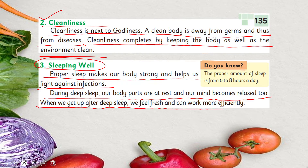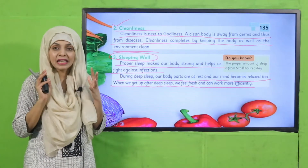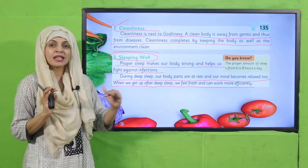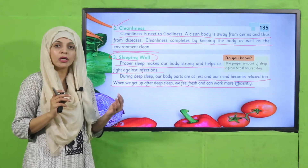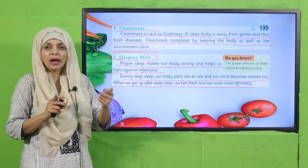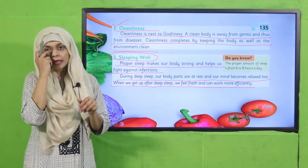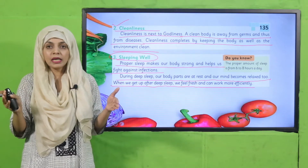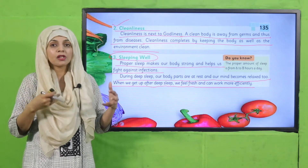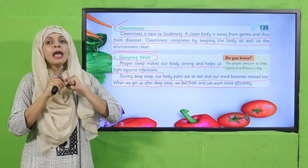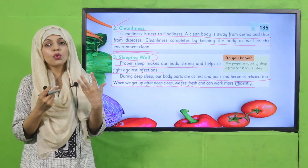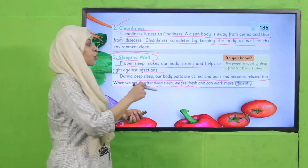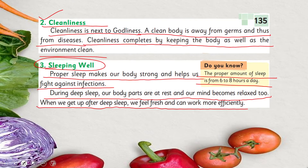When we get up after deep sleep we feel fresh and can work more effectively. Deep sleep ka matlab hai jab aap gehri aur lagataar neend lete hain - not 2 hours, then waking up, then 2 hours again with mobile in between. Aapko 6 to 8 hours ki neend poori karni hai. Is tarike se jab aap sote hain toh aapke body parts relax karte hain, aapka mind relax karta hai, aur phir you can work more effectively and efficiently. The proper amount of sleep is 6 to 8 hours a day.